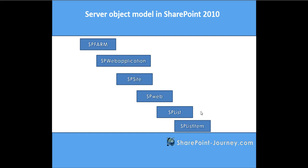Server object model is basically used to interact with various SharePoint components. If you see this slide, you have object model structure starting with SP Farm, SP Web Application, and SP Site. SP Farm is for the entire SharePoint farm, SP Web Application is used to access web application properties, SP Site simulates the site collection details, SP Web is for a website or site, SP List is used to access list details, and SP List Item is used to access the item inside the list. This is the basic hierarchy of objects we will use to access various SharePoint components while doing programming.